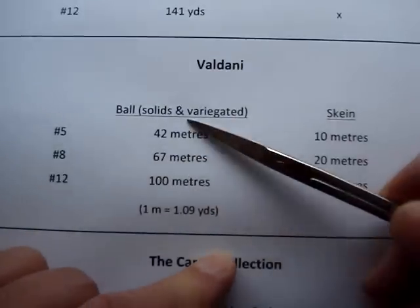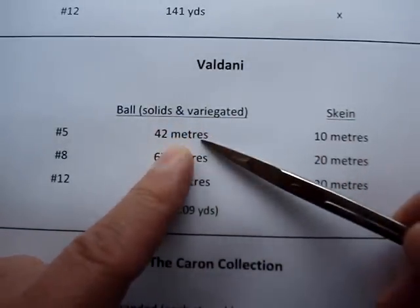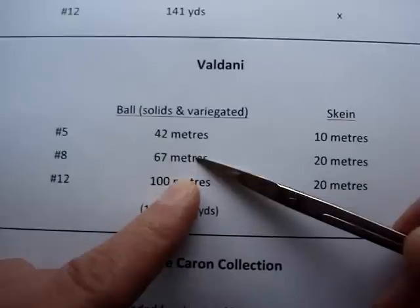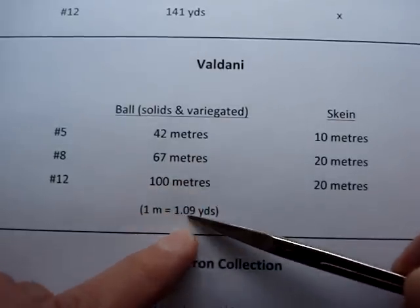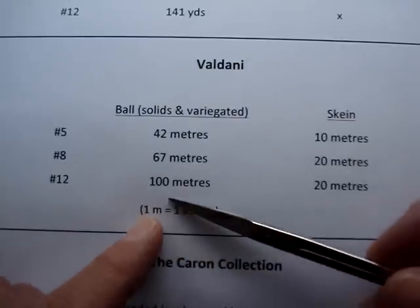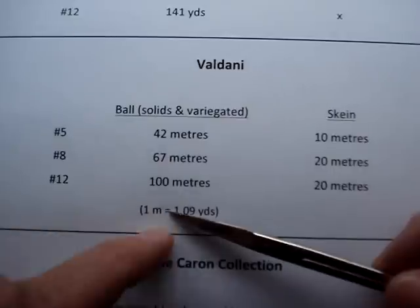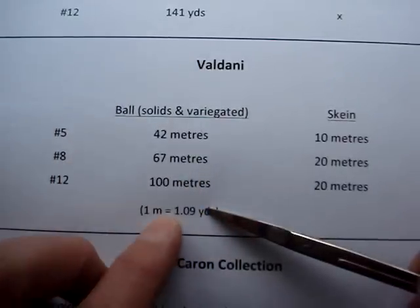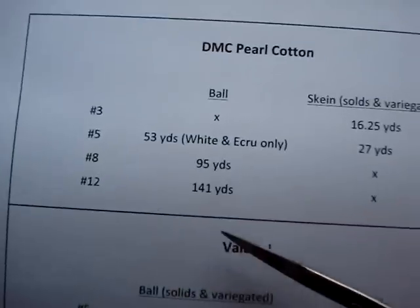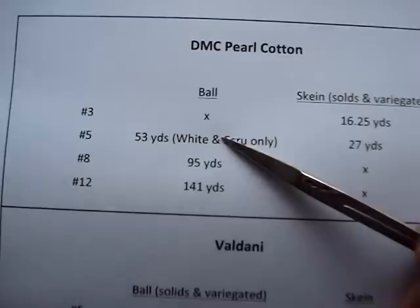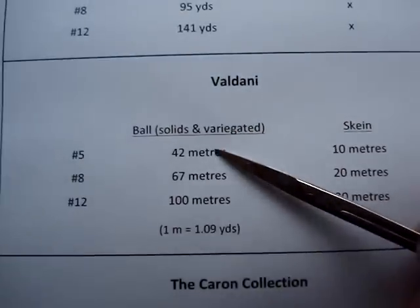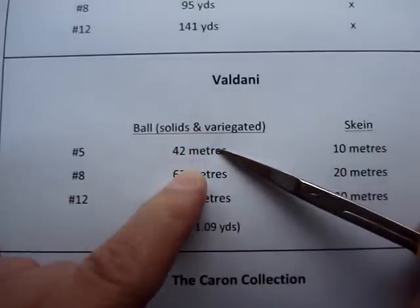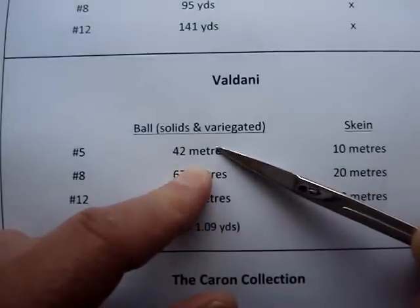The Valdani thread comes in balls or skeins, though most places carry the ball. Solids and variegated are the same yardage: number five is 42 meters per ball, size eight is 67 meters, and size 12 is 100 meters. One meter equals about 1.09 yards, so you can almost do a one-to-one ratio. If an old pattern calls for one ball of number five (53 yards), one ball of Valdani number five (42 meters) might work, though I always like to get a little extra.